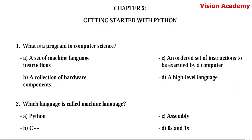What is a program in computer science? Option A: a set of machine language instructions. Option B: a collection of hardware components. Option C: an ordered set of instructions to be executed by a computer. Option D: a high level language. Here, option C — an ordered set of instructions to be executed by a computer — is the right answer.